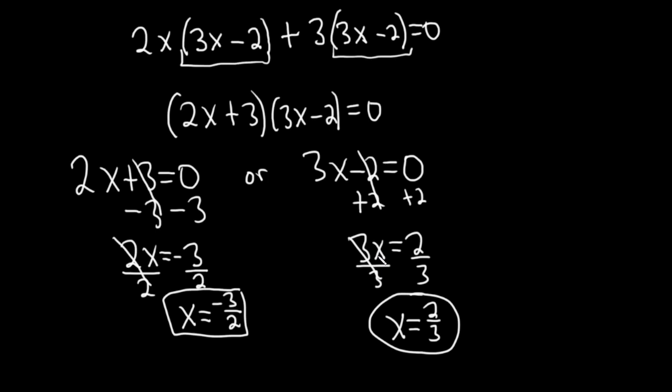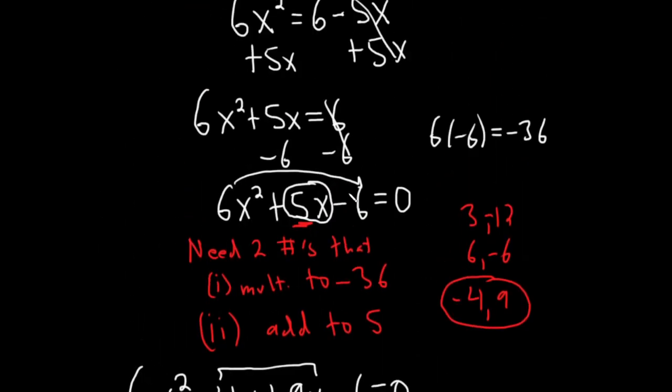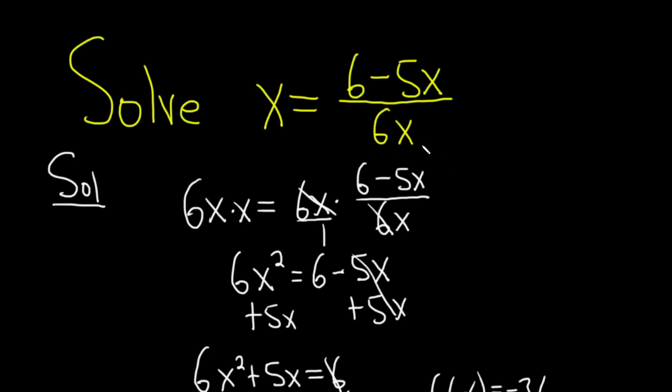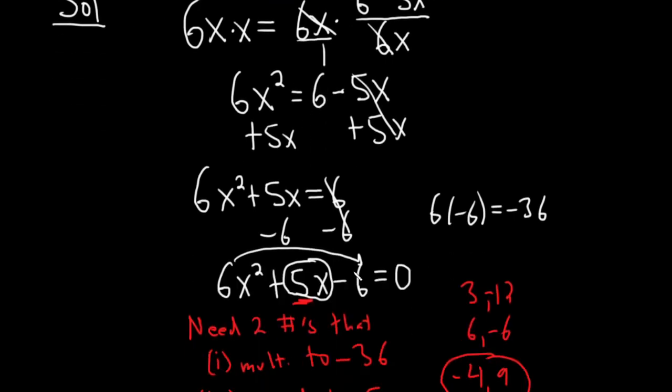It looked like a really simple problem at the beginning, but it was a lot more involved. And sometimes that happens, right? It looked like an innocent problem. Start off by getting rid of the fraction by multiplying by 6x. You end up with a quadratic equation. Whenever you have a quadratic equation, you want to set it equal to 0 and try to solve. We could have solved this multiple ways, actually. We could have used the quadratic formula. We could have completed the square.